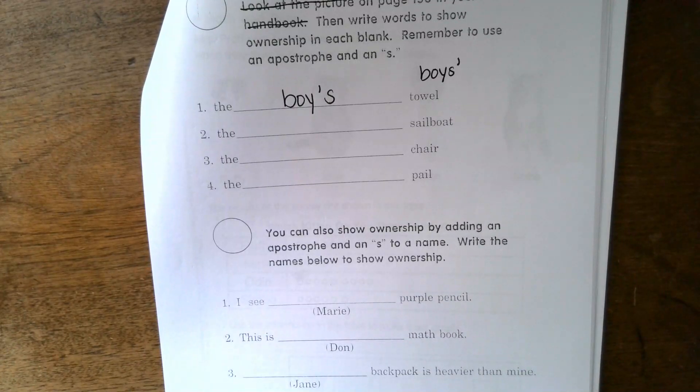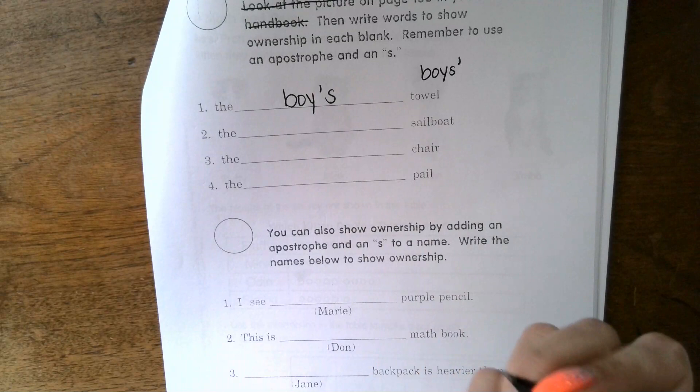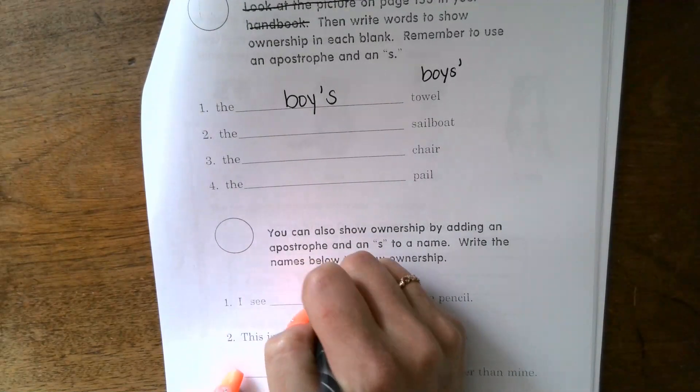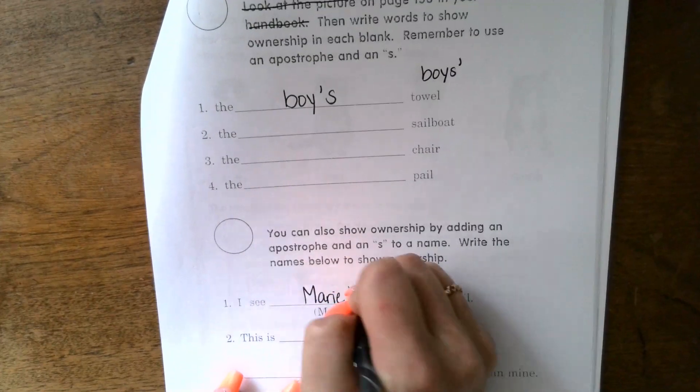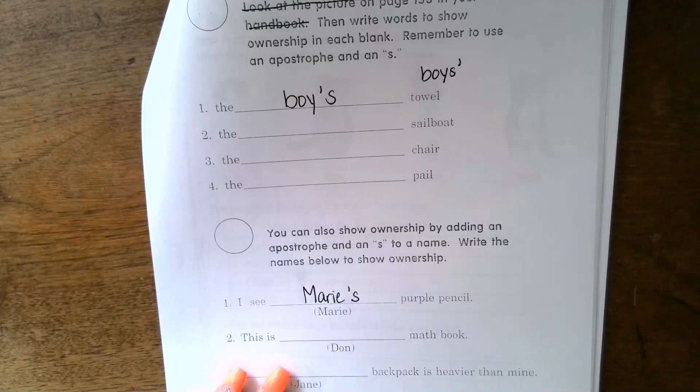In the second section it says you can also show ownership by adding an apostrophe and an S to a name. Write the name below to show ownership. This will be a little bit easier. Number one says 'I see Marie's purple pencil' - capital letters because we're using proper nouns here. Marie's, apostrophe S. Good job.